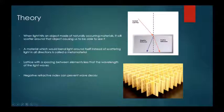When light hits an object made of naturally occurring materials, it will scatter around that object, causing us to be able to see it physically. However, imagine if we could manufacture a material which would bend light around itself instead of scattering that light in all directions. This would allow us to see through that object as if it were not there at all. A material with this property is called a metamaterial.